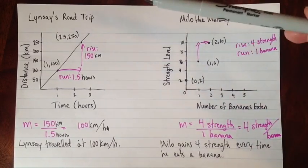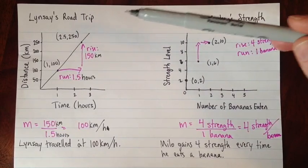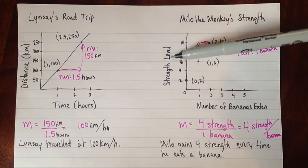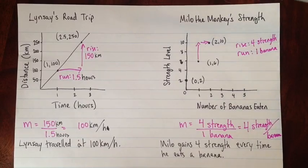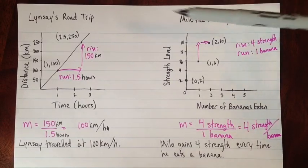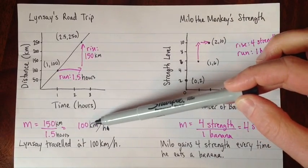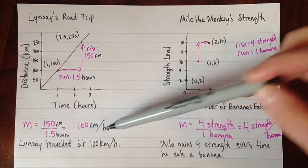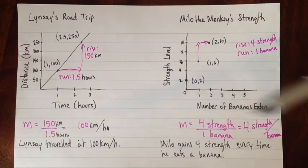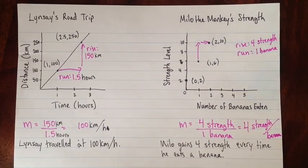Okay, so the takeaway message here is if you want to figure out what that slope is telling you about your situation, start and look at the units. Write the units in, and then once you've got the units, for example, kilometers per hour or strength per banana, it's much easier to figure out what that slope is telling you. Alright, good luck! I'll see you next time.